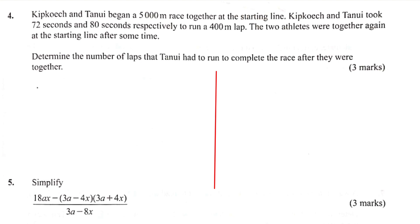Now to solve this question, there is something very important that you need to understand, and you are going to get this from the statement that the two athletes were together again at the starting line after some time. Kip Koeche and Tanui took 72 seconds and 80 seconds respectively to run a 400m lap. So after how long will they be back again at the starting line? To get that,